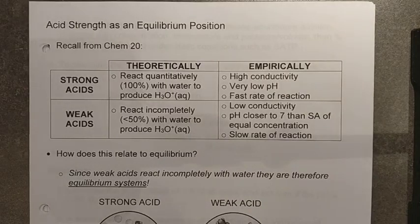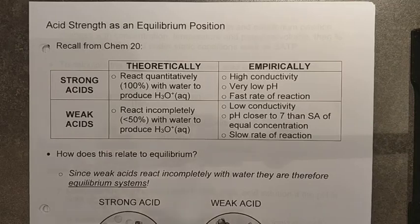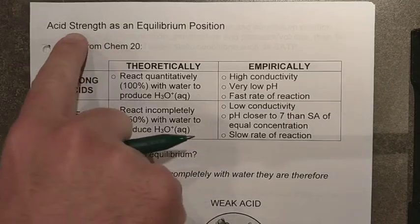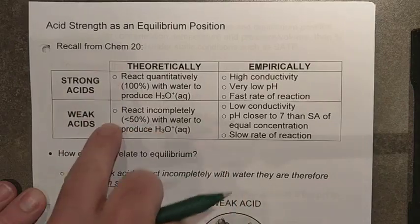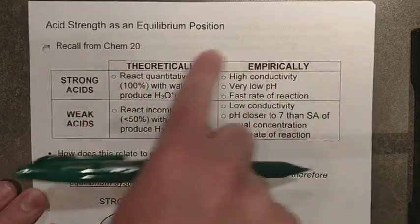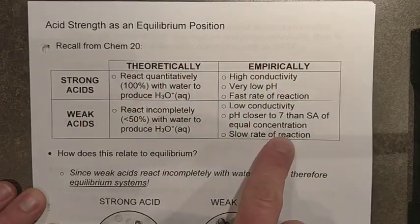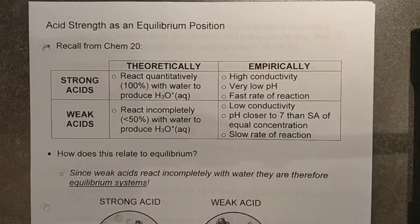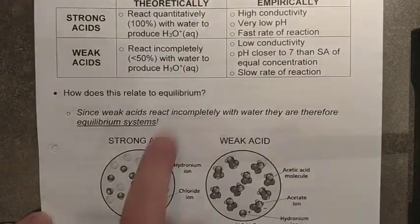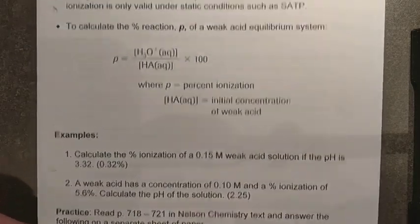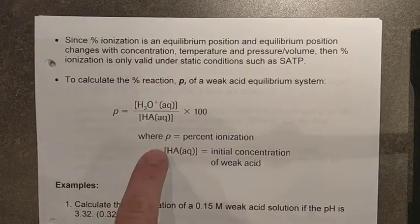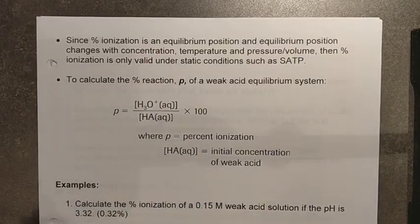We're going to get into 16.2 here in a second. One thing I want to talk about — I realized I missed this in the last set of videos — is at the end of 16.1 there is a section on acid strength and equilibrium position, talking about strong and weak acids, which we did and looked at briefly in Chemistry 20. We're going to leave it there. You can get rid of this section on strong and weak acids, and also percent ionization.